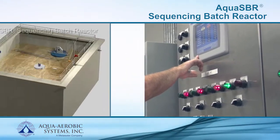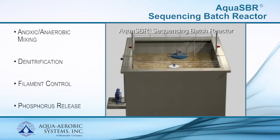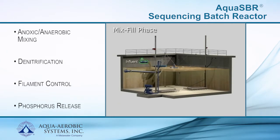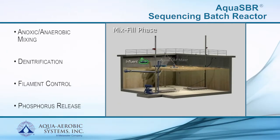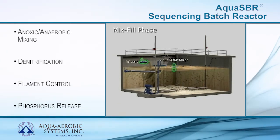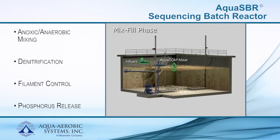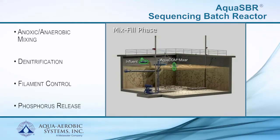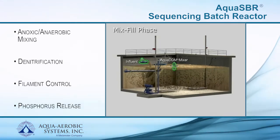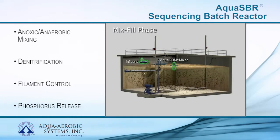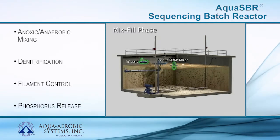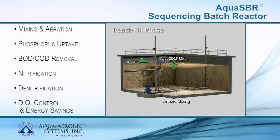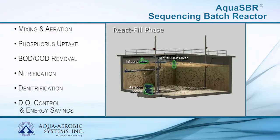Operation of the Aqua SBR is a five-phase process beginning with Mix Fill. In this phase, flow enters the reactor and a complete mix environment is achieved with a dedicated Aqua DDM mixer. The absence of dissolved oxygen and rapidly depleting nitrate levels create the ideal anaerobic environment, promoting biological phosphorus release. This phase also operates as a fully adjustable selector process to control filamentous organisms.